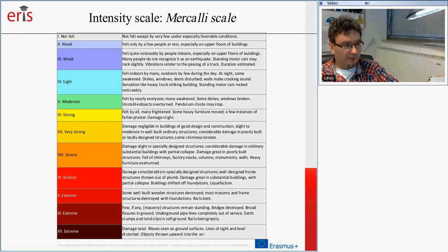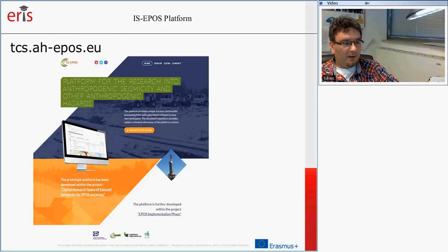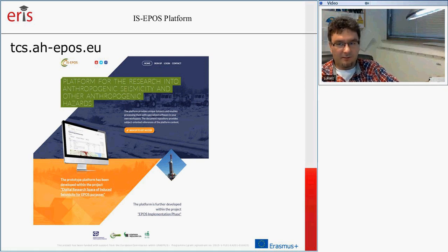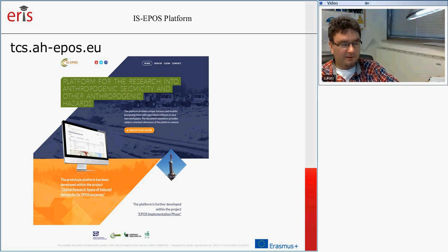This is the Mercalli scale — you can see how we describe ground shaking and what each degree means. I also encourage you to look at the ESPOS platform, an e-tool where you can work with real seismometers, real seismograms, and real earthquakes — both induced by human activity from Europe and from Vietnam. Thank you for your attendance, and have a nice day.